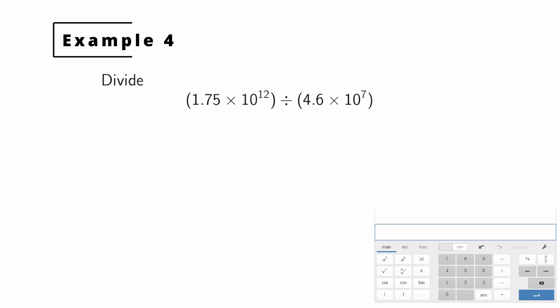Here's our final example. We want to divide two numbers in scientific notation. What I'm going to do first is rewrite this division in fraction notation instead of using the division symbol. So it becomes 1.75 times 10 to the 12th over 4.6 times 10 to the 7th. Just like with multiplication, I want to regroup this so that the parts that are not the powers of 10 are written as their own division, and then the powers of 10 are also written as their own division.